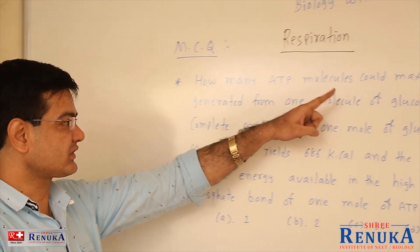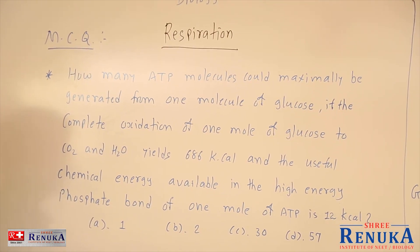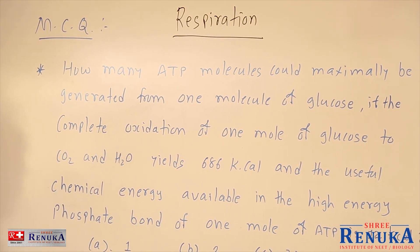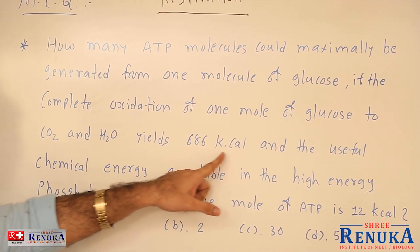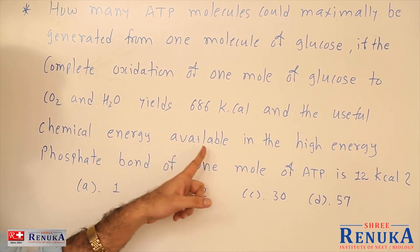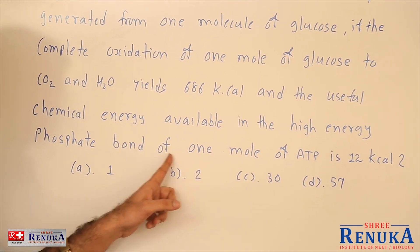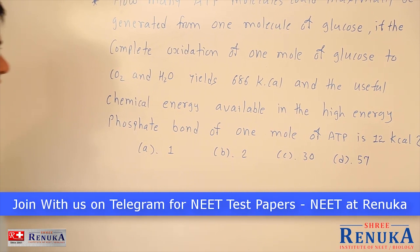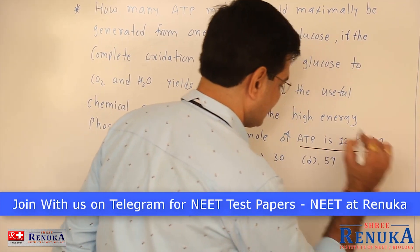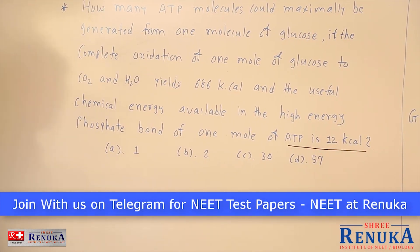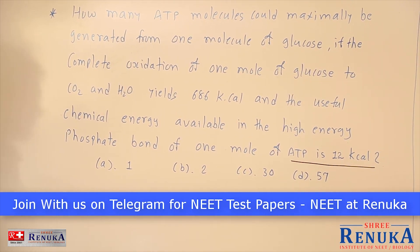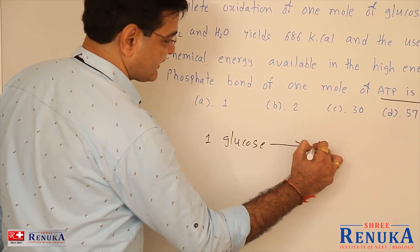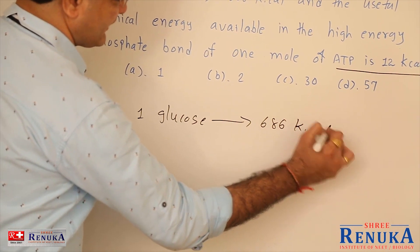How many ATP molecules could maximally be generated from one molecule of glucose? The complete oxidation of one molecule of glucose to CO2 and H2O releases 686 kilocalories, and the useful chemical energy available in the high-energy phosphate bond of one molecule of ATP is 12 kilocalories. From one glucose molecule, 686 kilocalories of energy gets released.